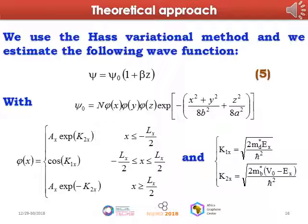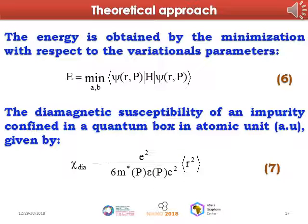To resolve the Schrödinger equation, we use the Haas variational method and we estimate the following wave function Psi, where beta is a variational parameter which takes into account the presence of the electric field, and Psi_0 is the wave function in the absence of the electric field. The energy is obtained by minimization with respect to the variational parameters, given by expression number six. The diamagnetic susceptibility of an impurity confined in a quantum box in atomic units is given by expression number seven.